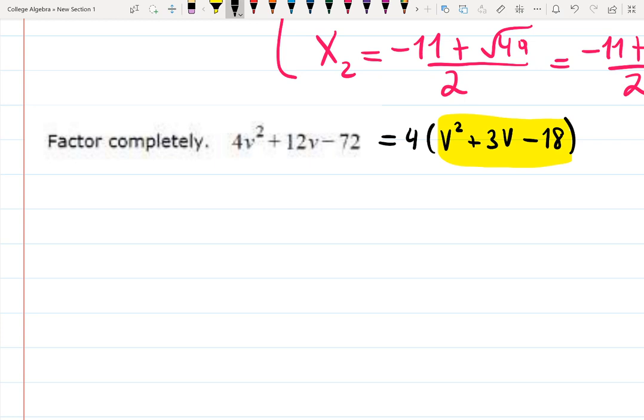And now, instead, I will find roots for this expression inside of the parentheses. And then the answer will be multiplied by the 4 in front of the expression. So, let's do that. v squared plus 3v minus 18 equals 0. That's what kind of quadratic equation I will be working with.